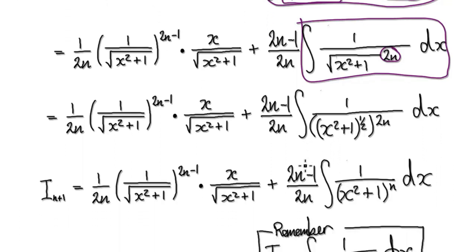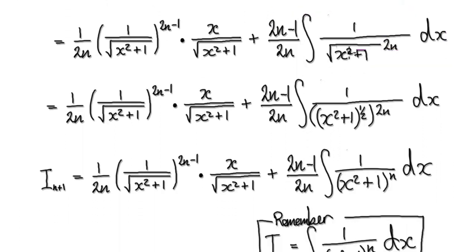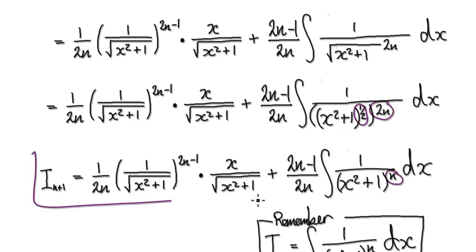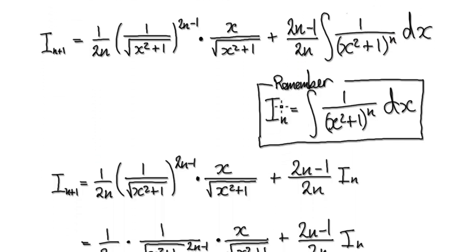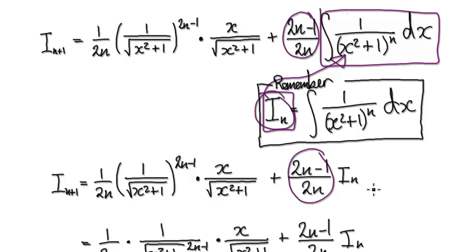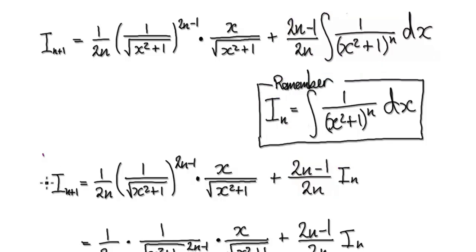The square root is really to the power of a half. So you have this thing to the power of a half, then powered by 2n — multiplying those gives us n. So that takes us to this stage. From the previous video, we said let I_n be this integral, and this integral here is I_n. So we can put I_n into this block: your constant and then your I_n.